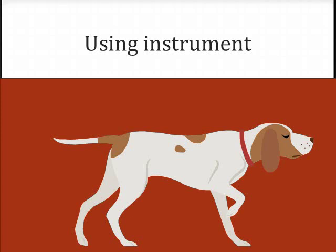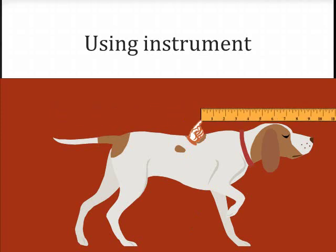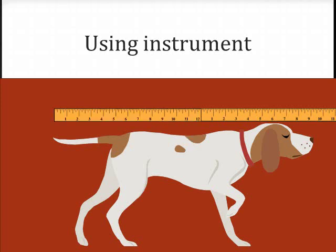Let's say we're trying to measure the length of a dog using a meter stick. If the meter stick isn't long enough to measure the entire length of the dog, you might put your finger where the ruler left off, move the ruler, and measure the rest. That would cause uncertainty — your finger might not be in exactly the right spot, and you might not move the ruler to the right spot either.